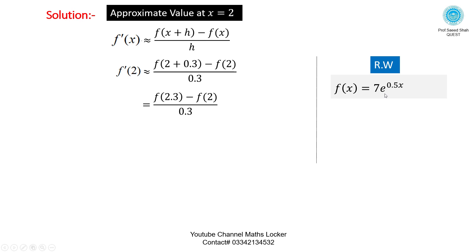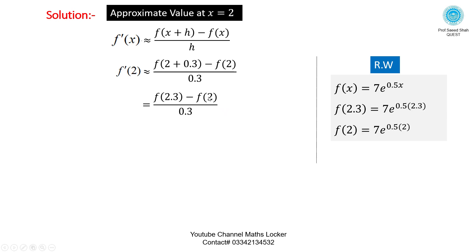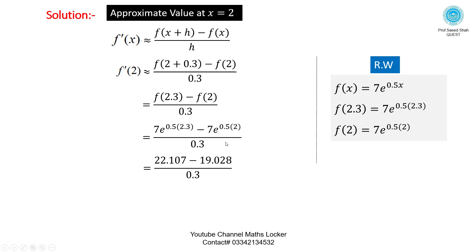Working out the function f of x equal to 7 times e raised to the power 0.5x: first putting x equal to 2.3, then putting x equal to 2. When putting x equal to 2.3, we get a result. When putting x equal to 2, we get another result. Putting these values — 7 times e raised to the power 0.5 times 2.3, and 7 times e raised to the power 0.5 times 2 — we get the approximate result: 10.265.